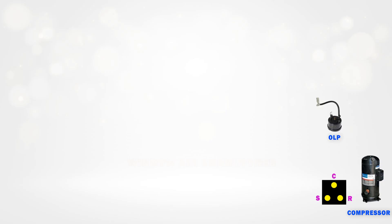To protect this compressor, we connect a device called an OLP, which stands for overload protector. Its job is simple: if high current flows through the compressor, the OLP will cut off the current by breaking the circuit and protecting the unit. To run the compressor, we also need a capacitor, specifically a run capacitor. This is an essential component for starting and maintaining the operation of the compressor.